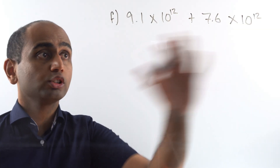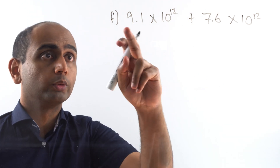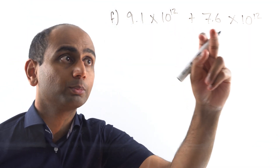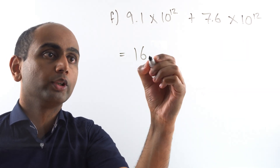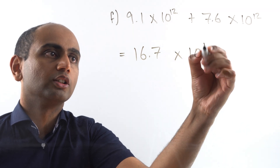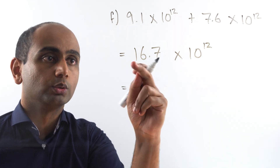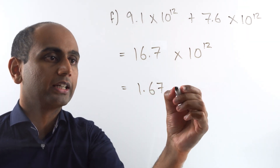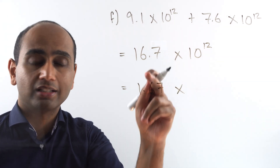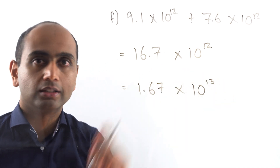Here's question F — pause the video and have a go at this one for yourself. Here's what you should have found. We've got 9.1 lots of 10 to the 12 plus 7.6 lots of the same thing, so that gives me 16.7 lots of 10 to the 12. That's not in standard form so I divide 16.7 by 10 to get 1.67, and because I divided by 10 I have to multiply the power by 10 to compensate, giving me 10 to the power of 13. So the answer is 1.67 times 10 to the power of 13.